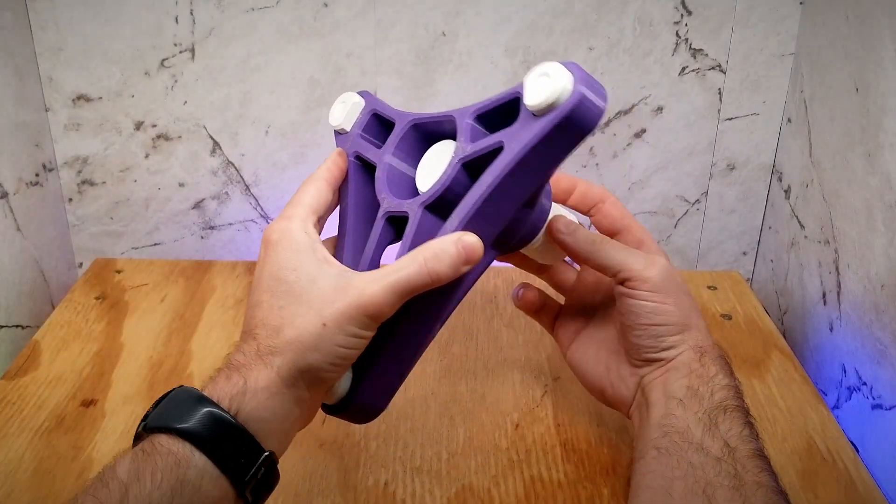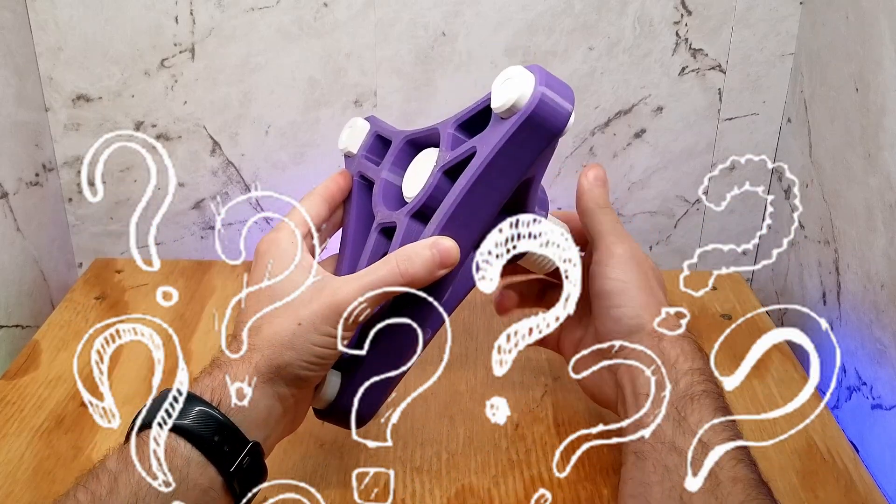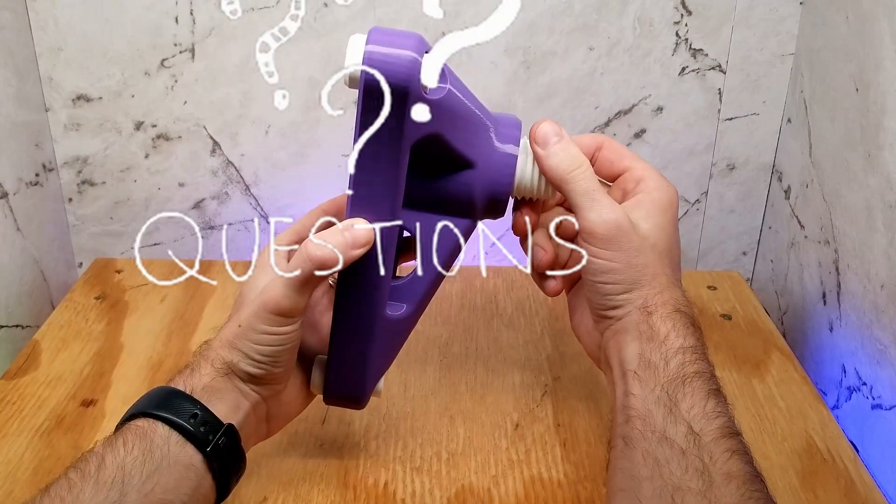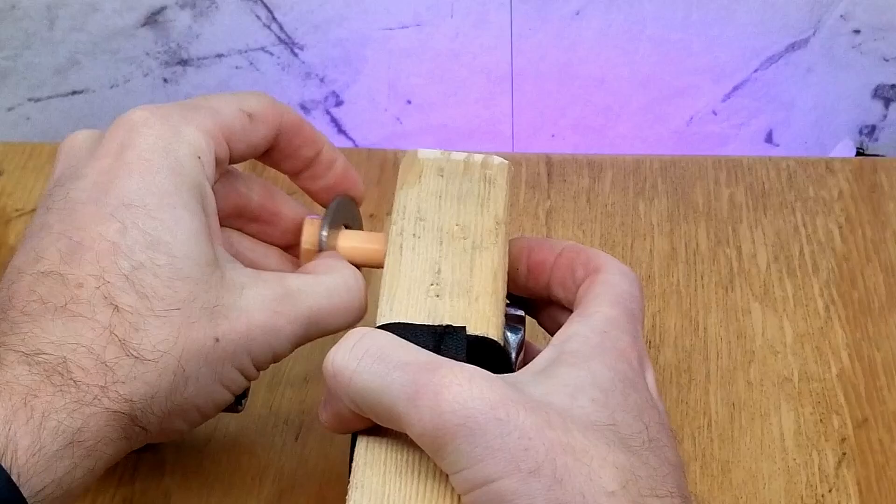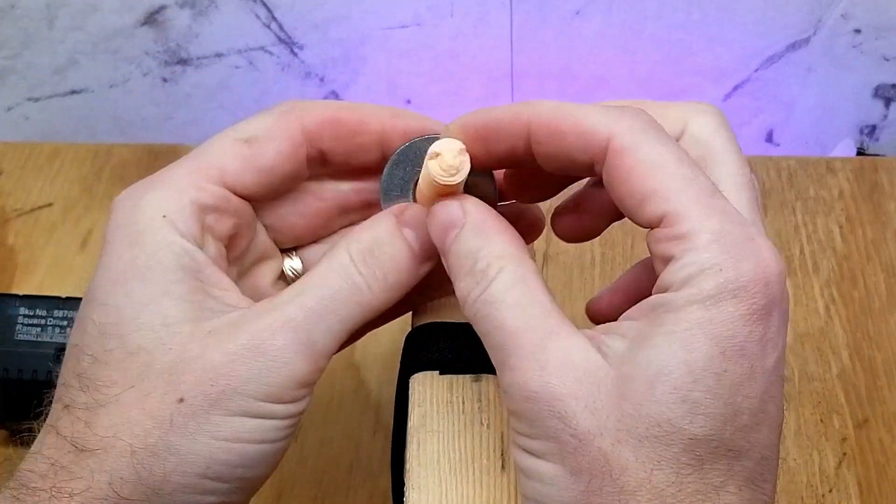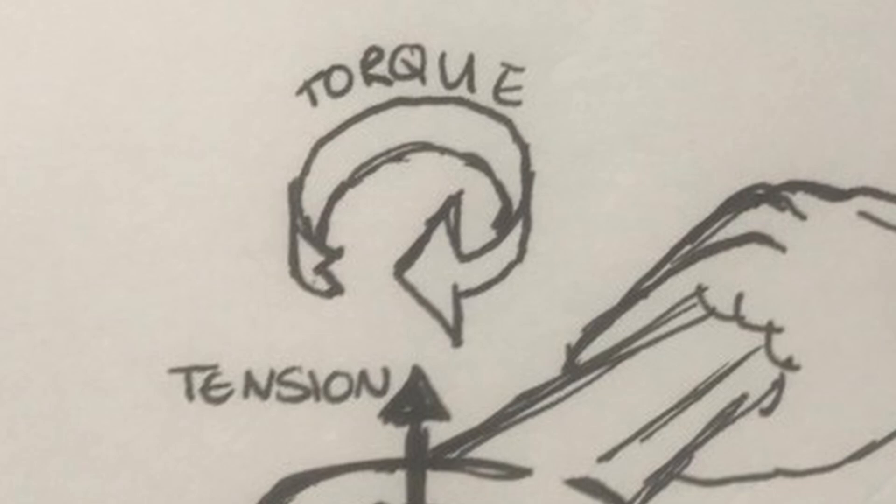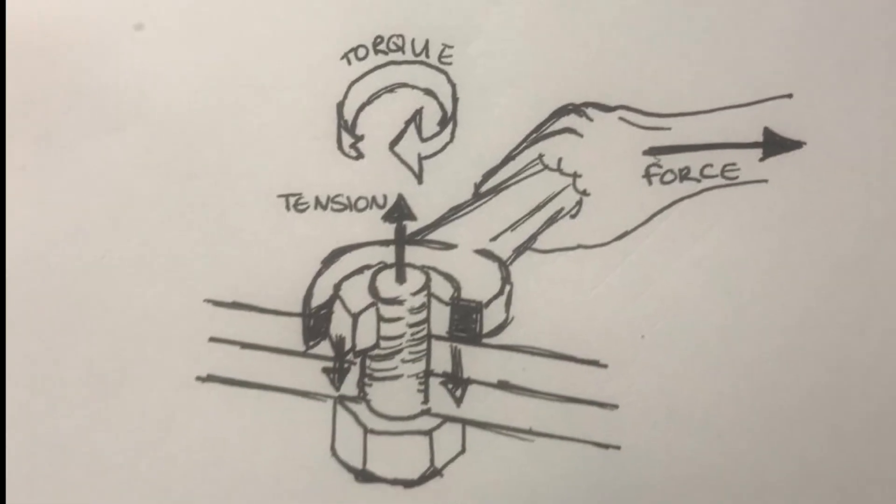All of these screws I've printed have worked well in their particular applications, but if I want to continue using 3D printed screws I have to know what the limits are. How tight can I tighten them before they break? So I have lots of questions, but one main question that needs answered. To find this out I'm going to have to apply some torque to a screw and push it to failure.